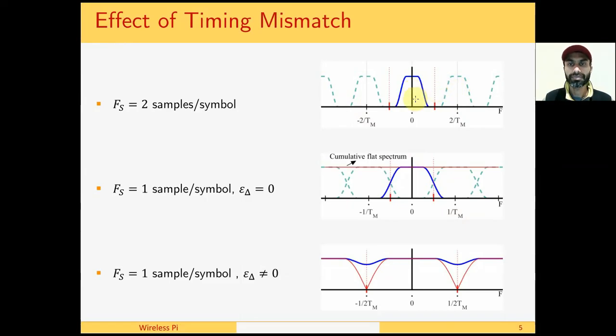At two samples per symbol, the spectral aliases are well separated from one another and no timing offset harms our signal. However, the decisions are on one sample per symbol and we need to down-sample the signal to symbol rate. When we do that, there is aliasing. As long as the timing is right, these aliases add up to produce a flat spectrum. This flat spectrum is the frequency domain condition for Nyquist no ISI criterion, and no inter-symbol interference occurs.